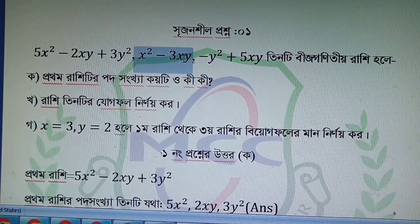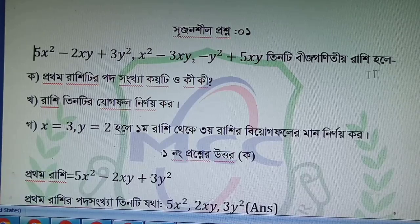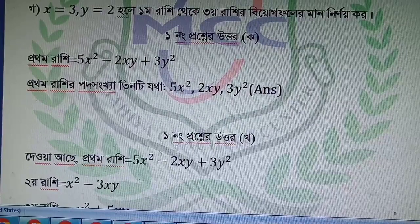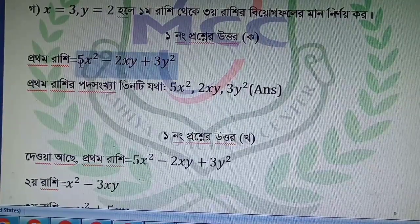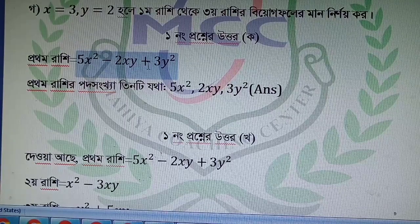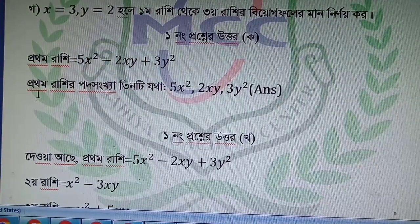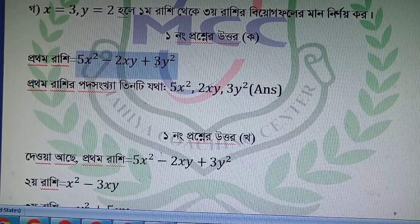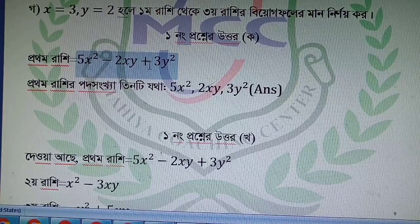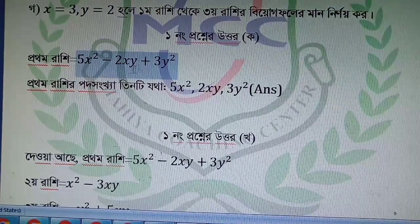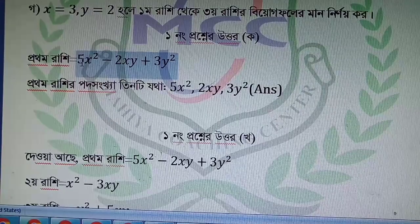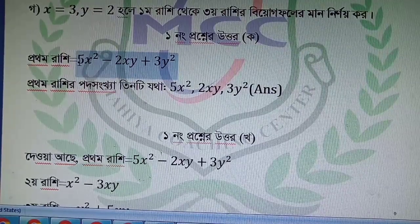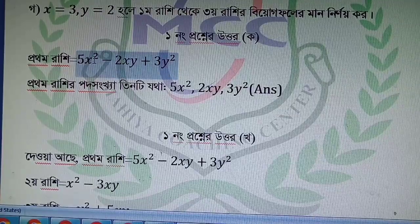The second expression is x² minus 3xy, minus y² plus 5xy. Every student: 5x² minus 3xy plus 3y², x² minus 2xy plus 3y².